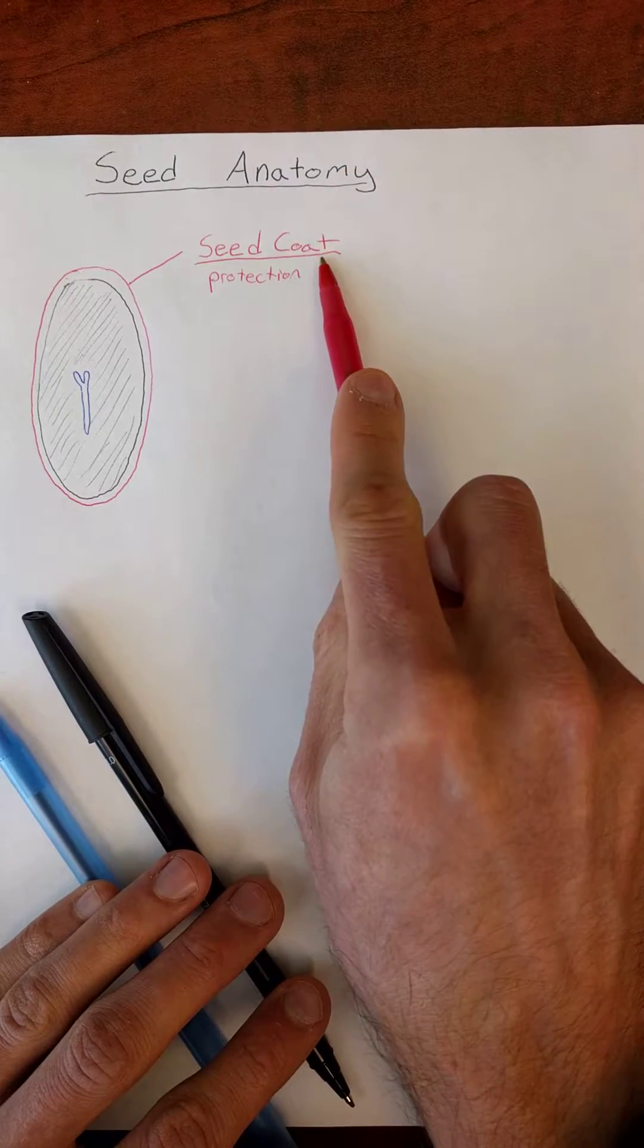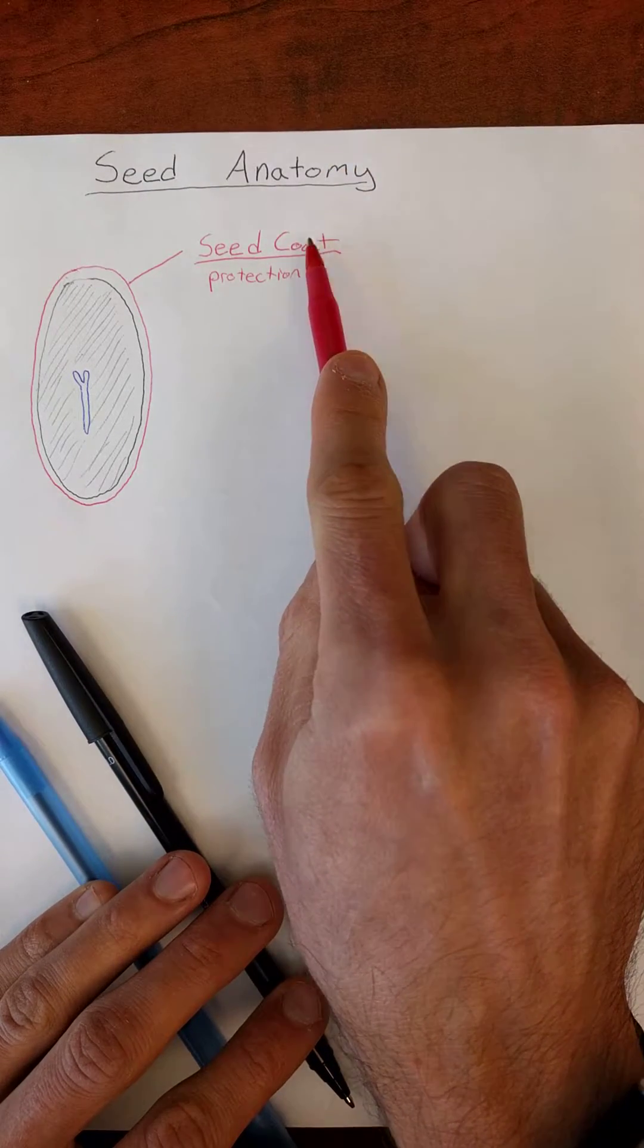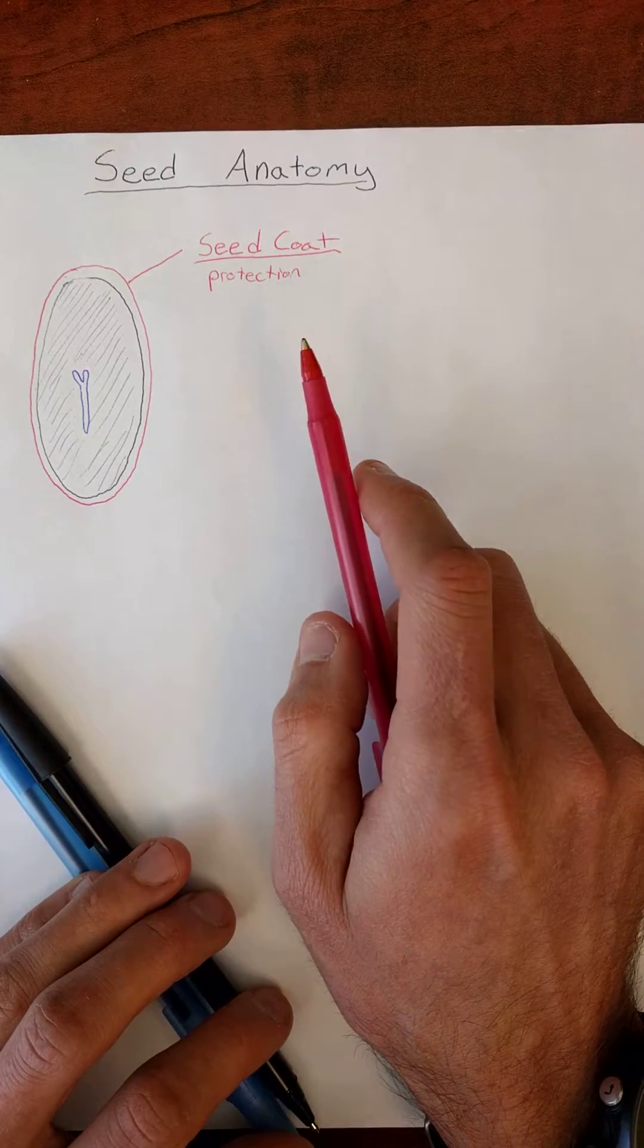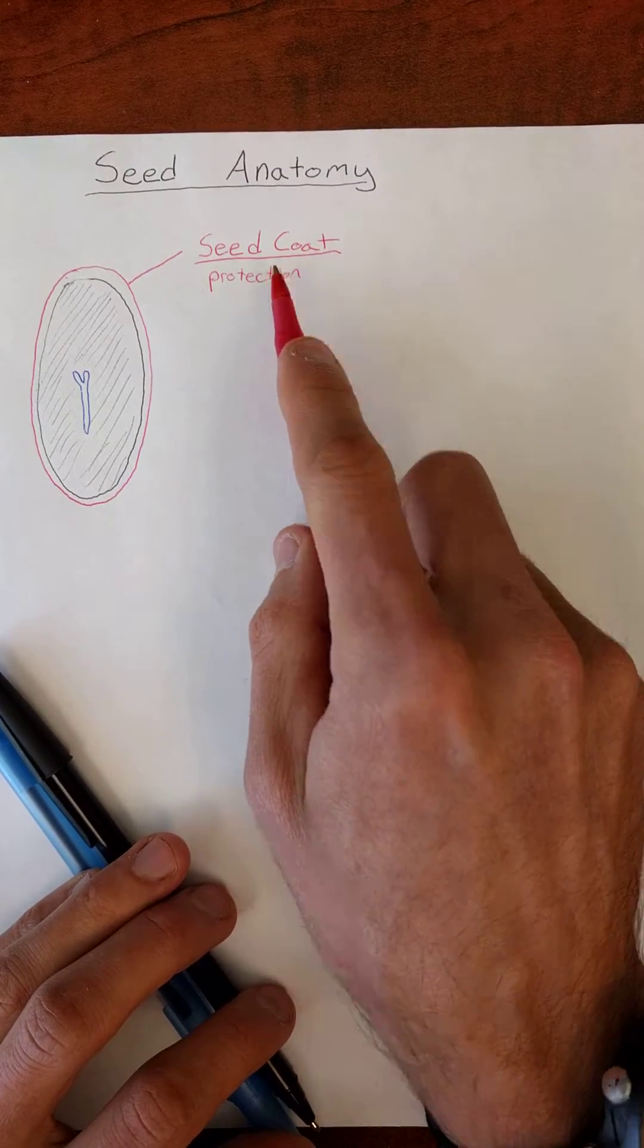Anatomy are the structures, so the anatomy is the seed coat. The physiology, the function, is for protection.